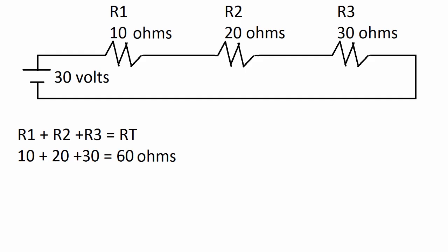So resistance total equals resistor one plus resistor two plus resistor three, so it's just 10 plus 20 plus 30, and this equals 60 ohms for resistance total.